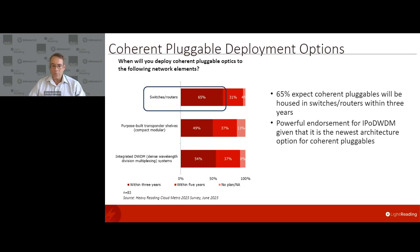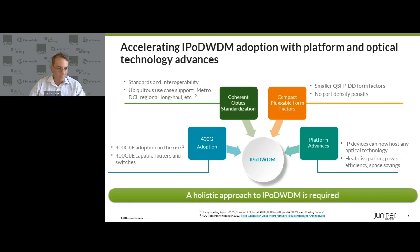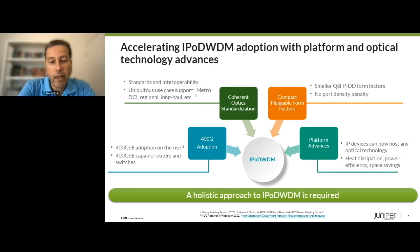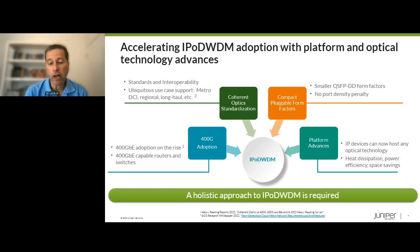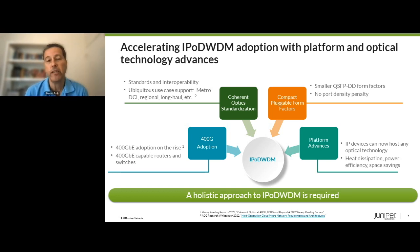Thank you, Sterling. We are experiencing an acceleration of adoption of IP over DWDM. Sterling showed survey results indicating that many service providers are looking to integrate new coherent pluggables into routers and switches — this is really what we've experienced in the last couple of years. I wanted to reiterate some of the points Sterling made about why this time it's different, why this time we're seeing accelerated adoption.